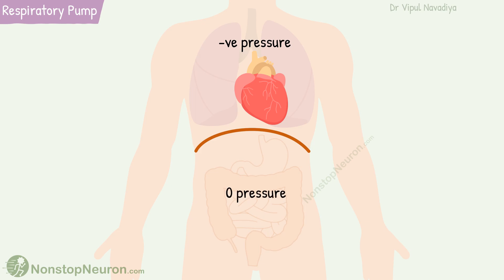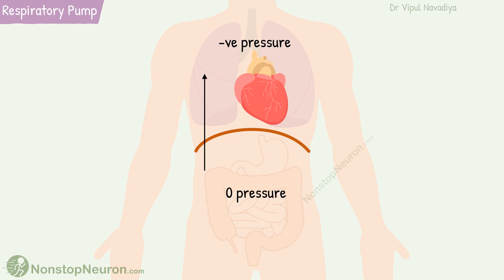On the other hand, the pressure in the lower region of the body is normal atmospheric pressure. Thus, there exists a pressure gradient from the lower region of the body to the chest. This gradient pulls the blood from the lower region into the chest, which in turn increases the venous return to the heart.